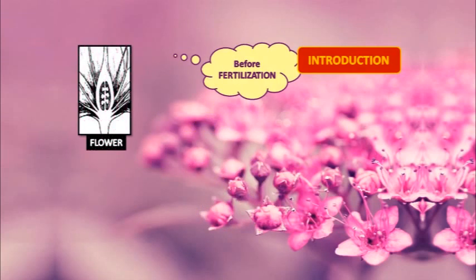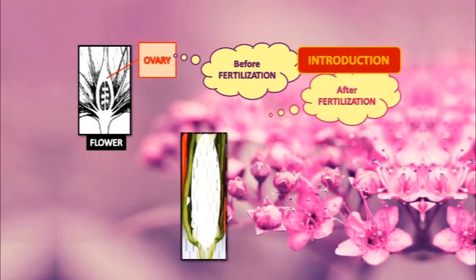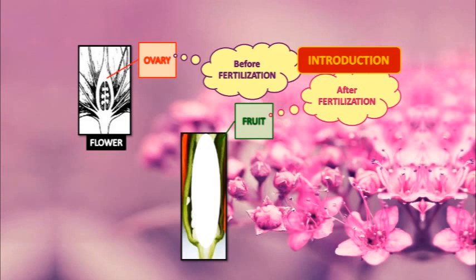Before fertilization, there is the ovary. After fertilization, it becomes a fruit — it gets metamorphosed into fruit. That's why we say it is a mature or ripened ovary which is developed after fertilization. Ovule gets converted into seeds, and ovary gets converted into fruit after fertilization. If a fruit is formed without the fertilization of the ovary, then that is called a parthenocarpic fruit.